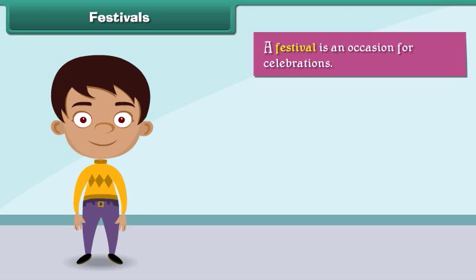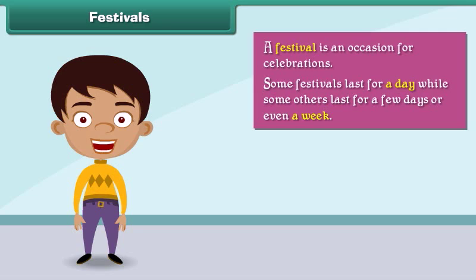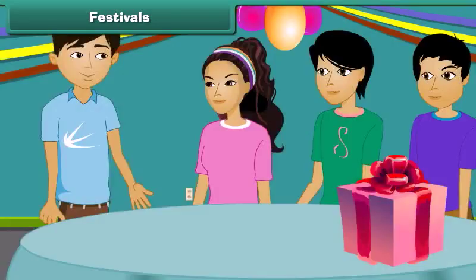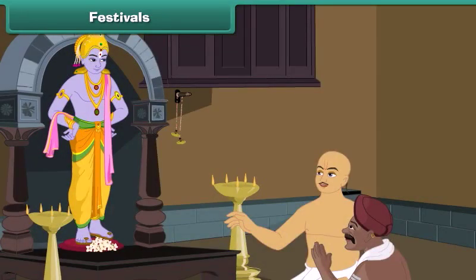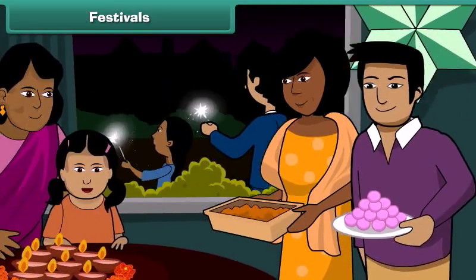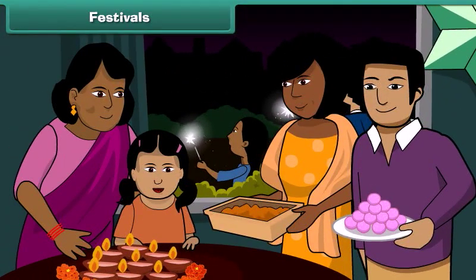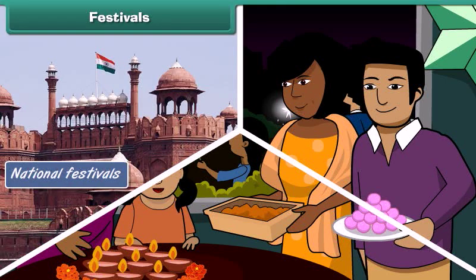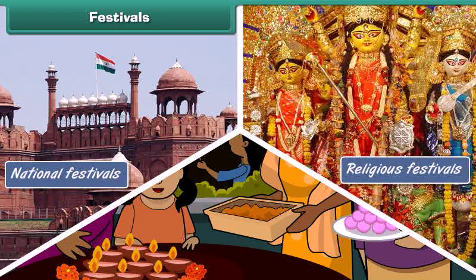A festival is an occasion for celebrations. Some festivals last for a day while others last for a few days or even a week. Festival times are happy times — during a festival we clean and decorate our houses, wear new clothes, pray to God, exchange gifts with friends and relatives, and enjoy delicacies. Festivals can be broadly classified into three categories: national festivals, religious festivals, and harvest festivals.